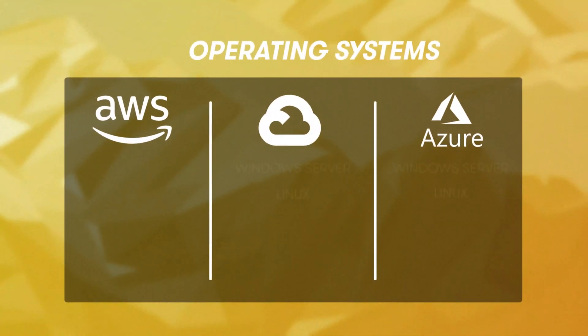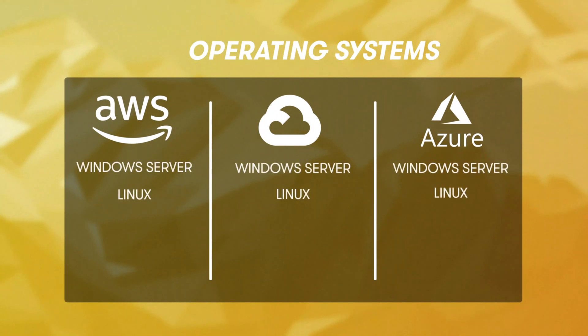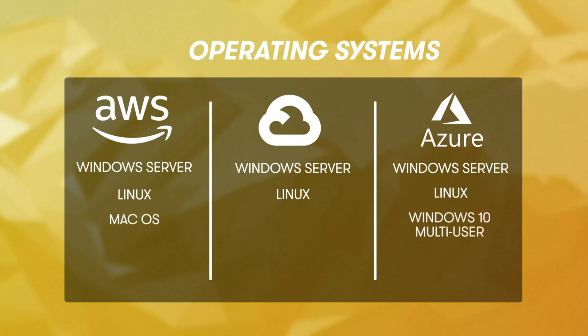Let's move on to the different types of operating systems available with each provider. The supported operating systems differ slightly between cloud providers. All three offer ready-to-use images for multiple versions of Windows and Linux distributions. In addition, AWS offers macOS, and in Azure, a multi-user version of Windows 10, aptly called Windows 10 multi-user, is supported. All providers offer images for a wide variety of Linux distributions. Some providers supply their own flavor of Linux, such as AWS with Amazon Linux. Specific distribution versions differ between providers.